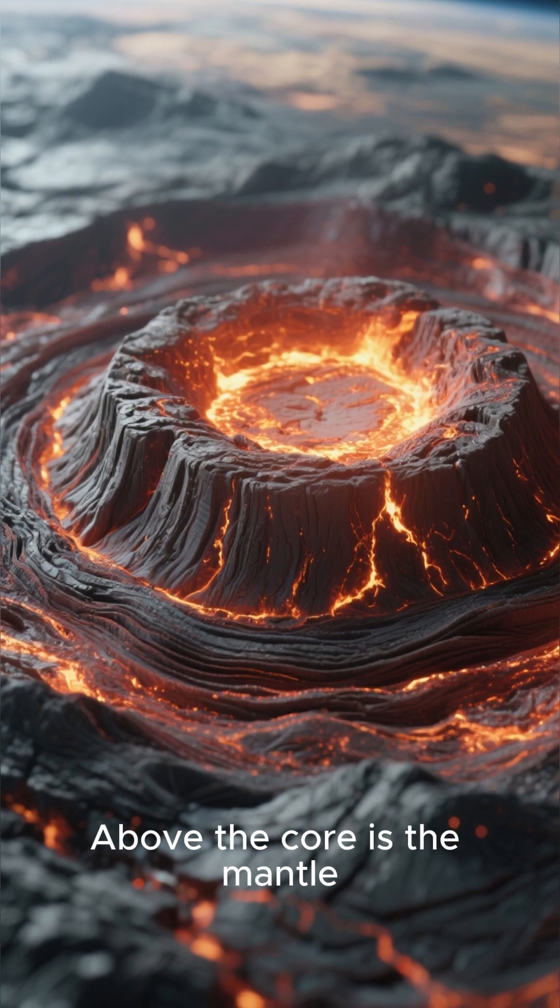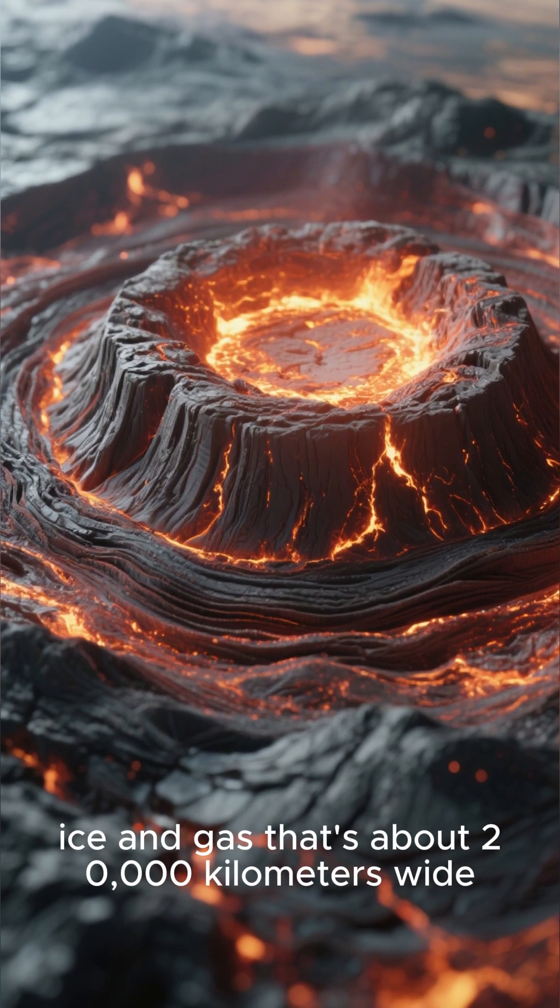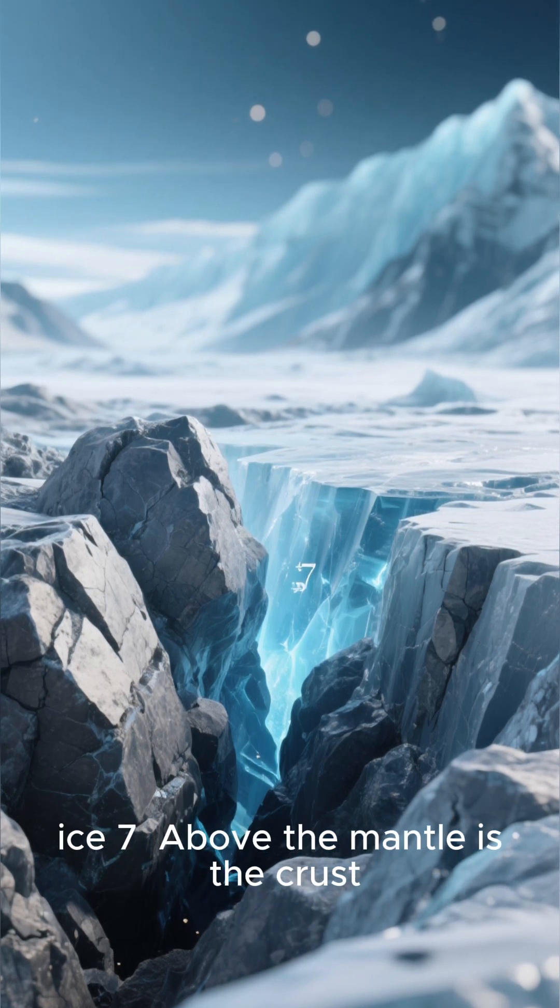Above the core is the mantle. It's a thick layer of rock, ice, and gas that's about 20,000 kilometers wide. The pressure here is so great that it squeezes the rock into a form of ice called Ice 7.